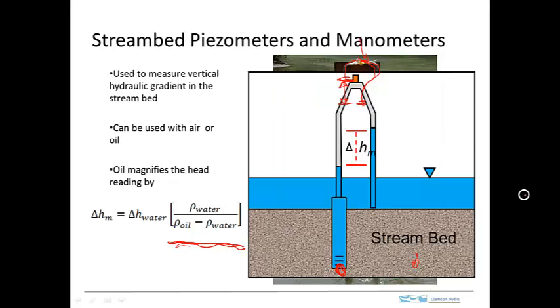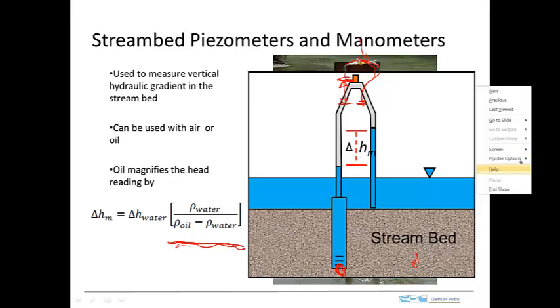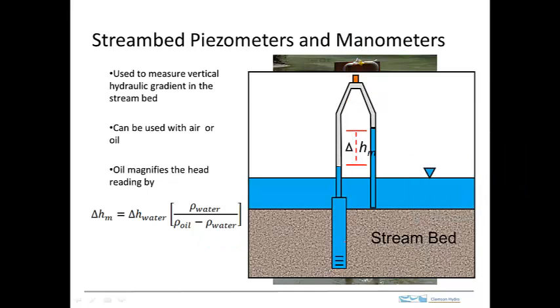Here's a schematic of what's happening with this particular device. Here's the piezometer, and here's the open part of the piezometer, and it's pushed in the stream bed. This is the manometer, this tubing here, and this is a valve, and this fluid, the gray area here is this alternative fluid, either air or some kind of oil, some kind of fluid that doesn't mix with the water and has some density difference.